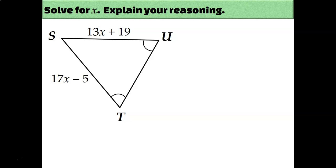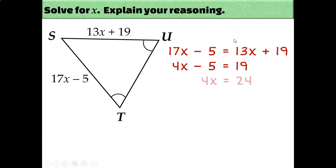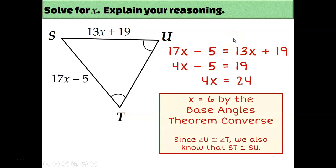For the next example, we have an isosceles triangle with two congruent angles, which means we must have two congruent sides. The sides opposite the congruent angles must be equal: opposite angle T is 13x + 19, and opposite angle U is 17x − 5. Setting them equal and solving gives x = 6 units, justified by the base angles converse theorem.